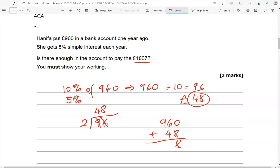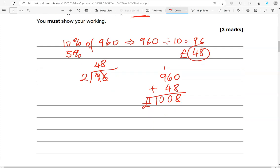Gives us 8. 6 and 4 is 10, so 0 down, 1 carried over. 9 and 1 is 10. So this is 1,008 pounds, which is 1 pound more than 1,007. So we're going to say yes.